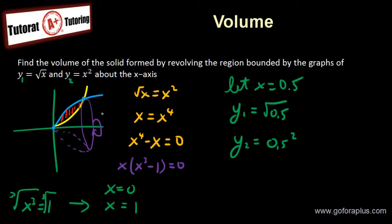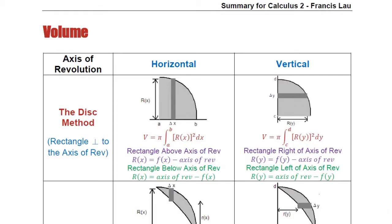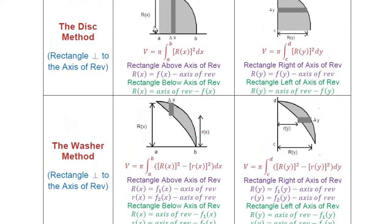Okay, so now that I have the top function, I have the bottom function, I need to set up the integral now. Volume is equal to... Now, according to this washer method, why am I choosing washer method? Because I have two functions away from the axis of revolution. This method has to stick to the axis of revolution.